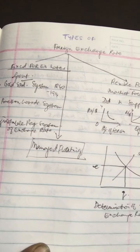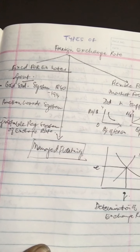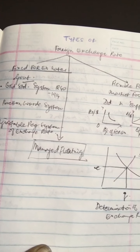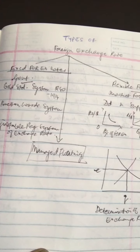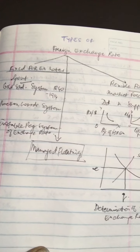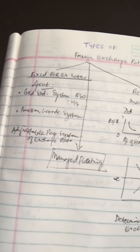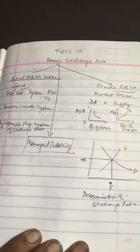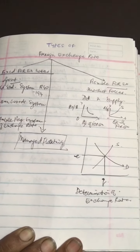This goes back to the 1870s when we had the gold standard system. Under the gold standard system, all currencies were defined in terms of gold. Some currencies were actually made in gold. Each country was committed to convert its currency into gold at a fixed price.